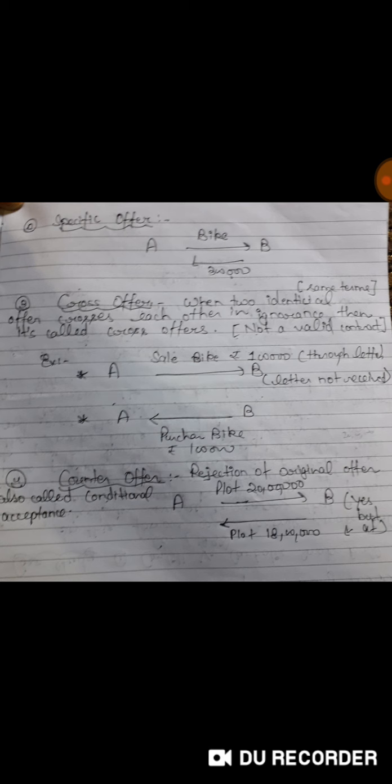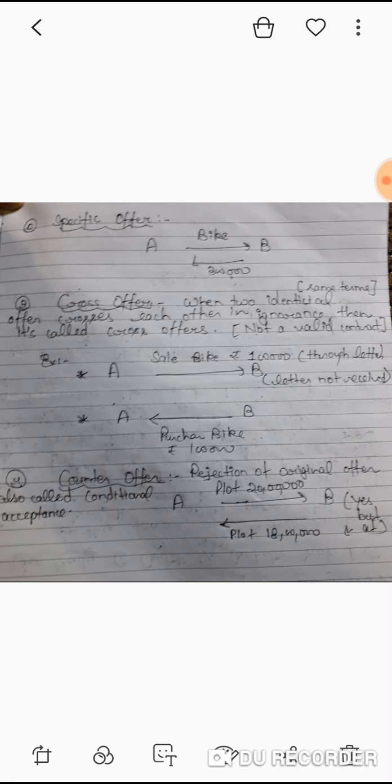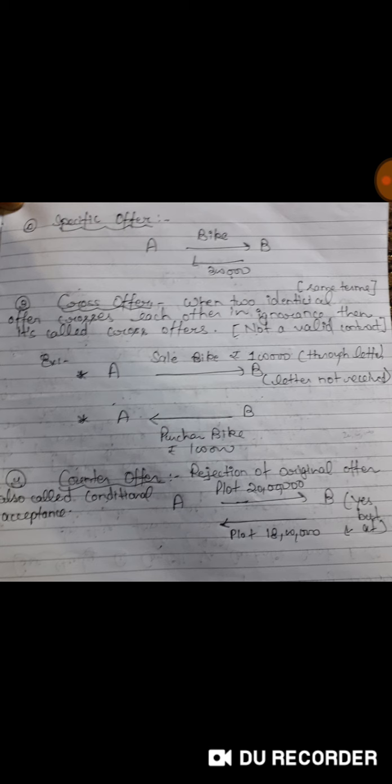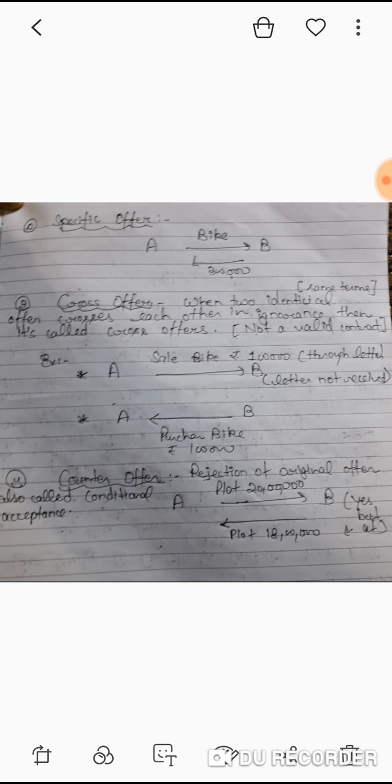For example, A is sending a message to B to sell his plot for Rs 20 lakh. And B said yes I agree, but I will purchase your plot not at Rs 20 lakh. I will purchase your plot at Rs 18 lakh. He is giving a counter offer.